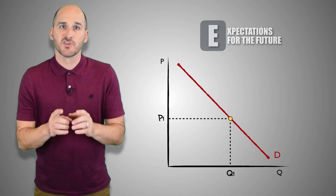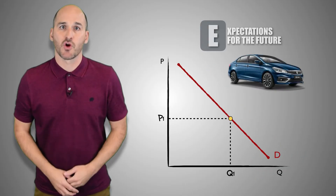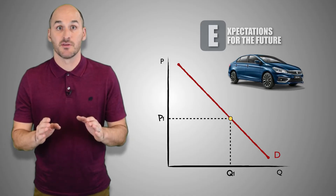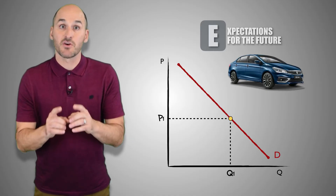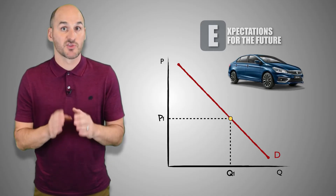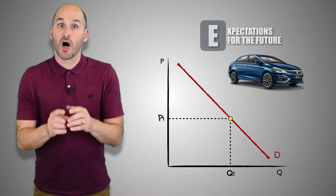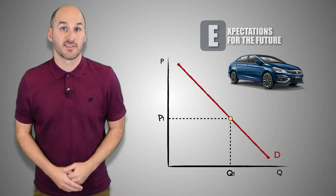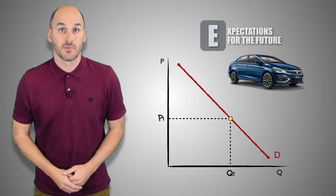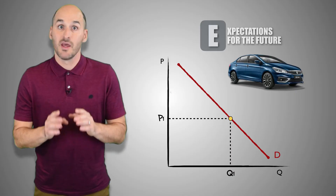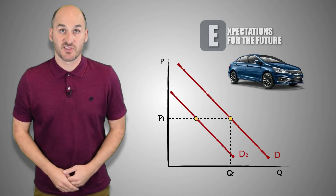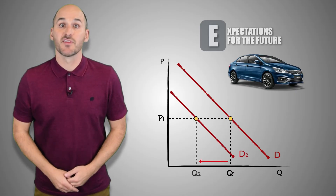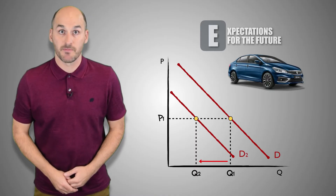Now suppose that consumers in the market for cars expect the economy is headed for a recession. Fears of high unemployment and economic uncertainty will cause consumers to buy lesser quantities of cars at every price level — expectations of an economic recession will cause a decrease in the demand for a good.